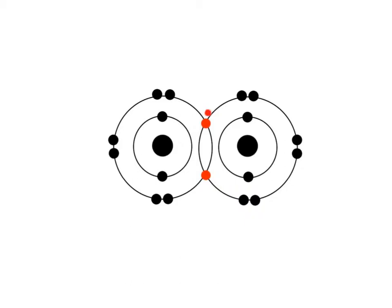When pairs of valence electrons are shared between atoms, like this pair of electrons shown in red, the valence shells of both atoms are filled at least part of the time. This is what creates the strength of the covalent bond.